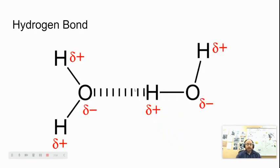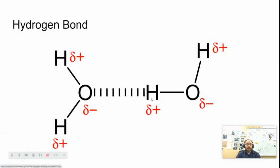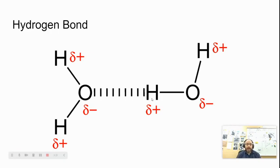Because of the unequal sharing of electrons, water is going to be highly attracted to itself. The oxygen end of the molecule is going to be attracted to the hydrogen end of another water molecule, and each water molecule will attract four other water molecules. Water's tendency to stick to itself is what we call cohesion. Water's tendency to stick to other things that have a polarity is called adhesion — like water sticking to glass, for instance.